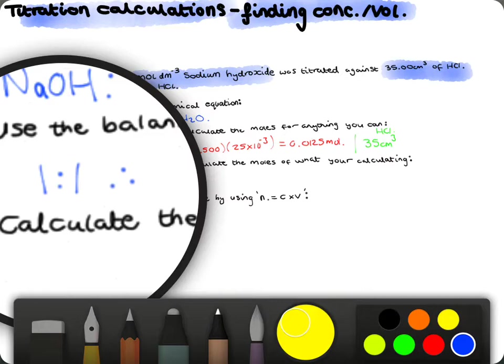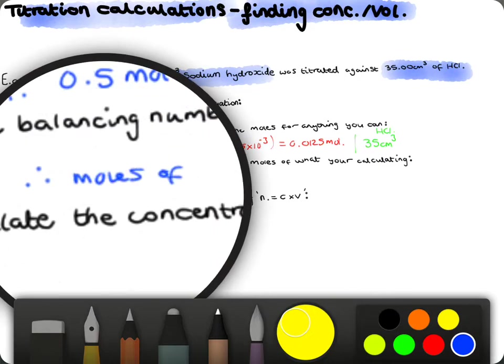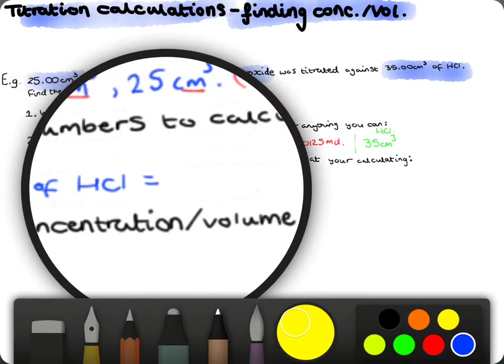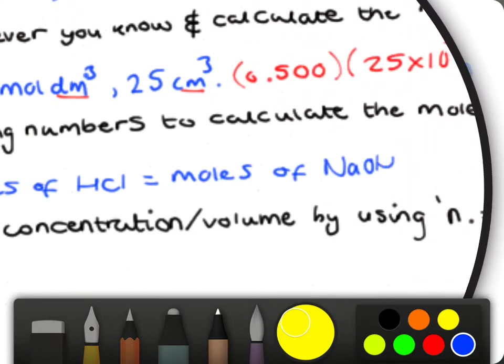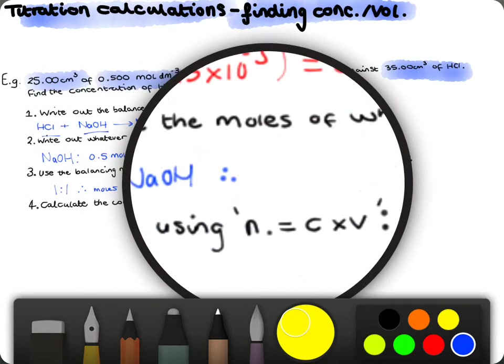So, that means our number of moles of hydrochloric acid will be the same as the sodium hydroxide. So, therefore, our moles of HCl equals moles of NaOH. And another, therefore, the moles will be 0.0125.